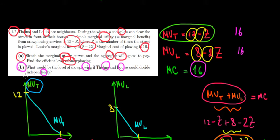They're not going to contribute to any snow plowing because the marginal cost would be above. Let's say in the case of Thelma, 16 would be somewhere over there. The marginal cost would be above the marginal utility. And the same logic would go for Luis.